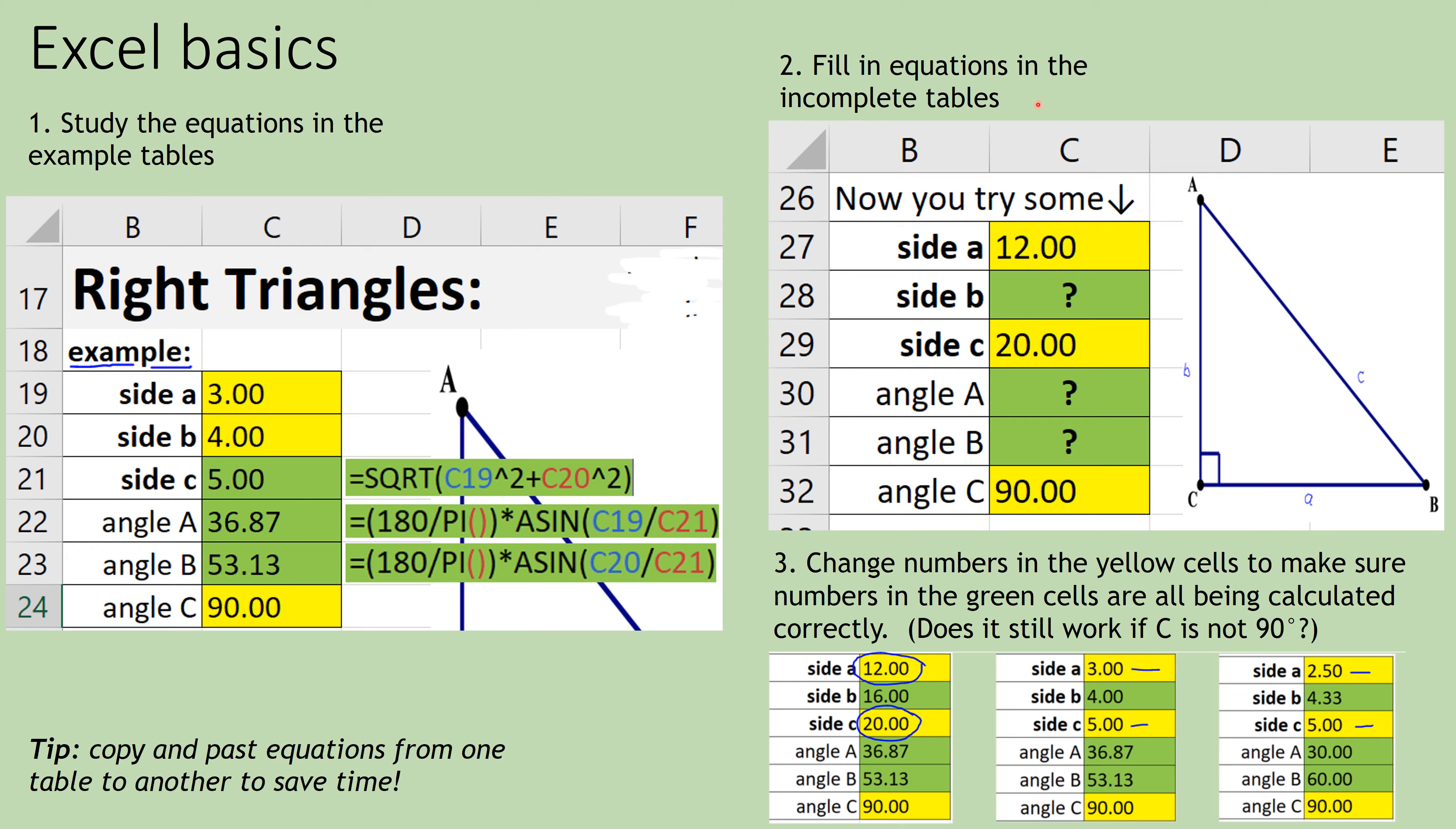And then you're going to go to a different scenario. So let's say instead of knowing side A and B, instead we know side A and C. And we have to, from this, figure out what B is. You can still use the Pythagorean theorem. You just have to switch it around a little bit, so see if you can add the needed equations to figure out the length of side B and the angles A and B off of this new one.